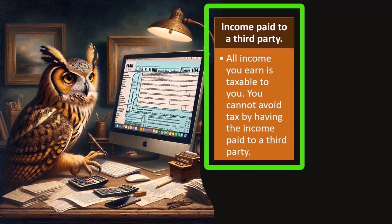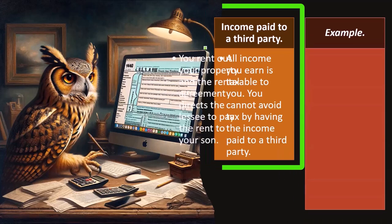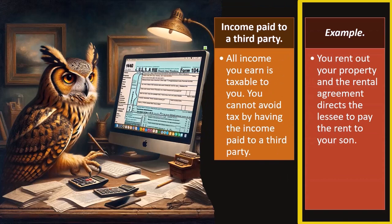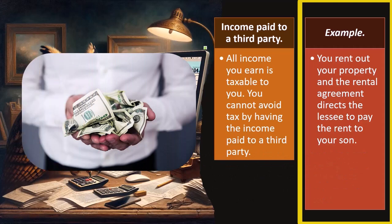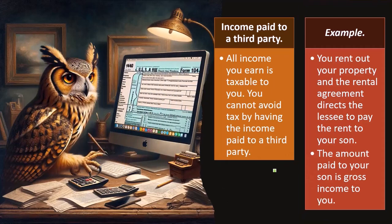For example, the income went into a friend's bank account and then they gave it to you the following year. You should still be recording the income when the cash was available to you. So, if you rent out your property and the rental agreement directs the lessee to pay the rent to your son, the money is not going to you — it's going to your son. That would be the same situation as the money going to you and then you paying your son. The amount paid to your son is gross income to you.